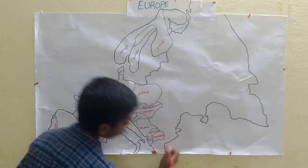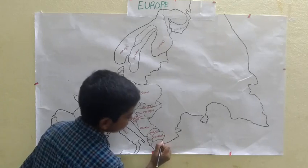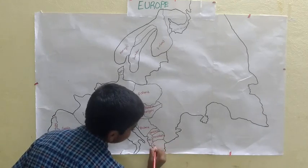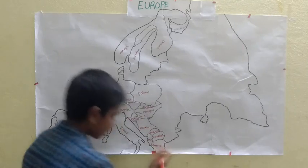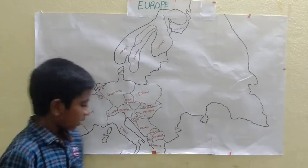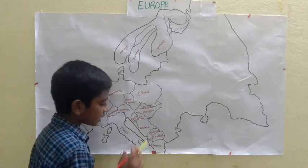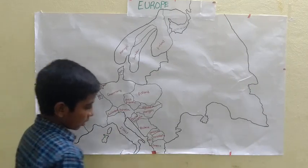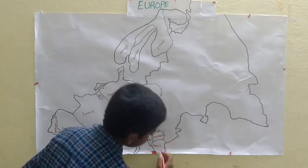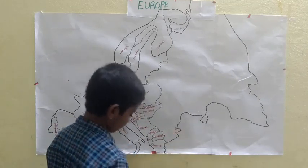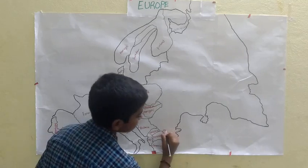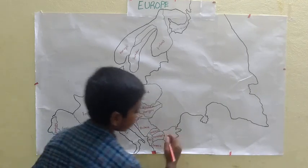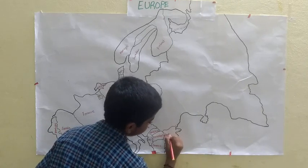Going down we see the very important country — Greece. The great Alexander was the king of Greece. Next we see Bulgaria.